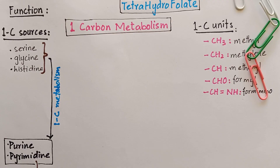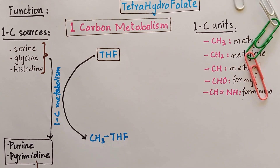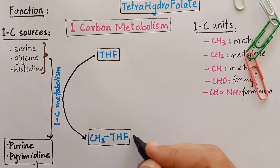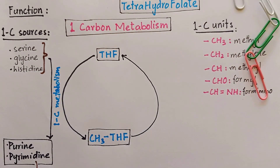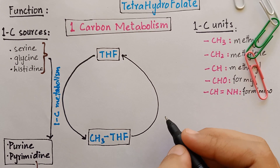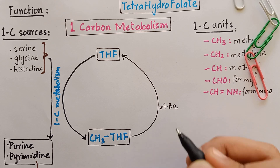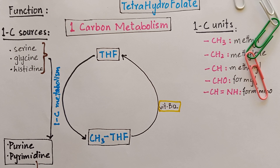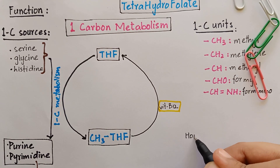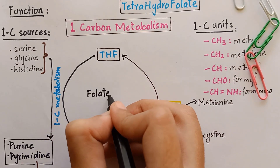As a result of one carbon metabolism, tetrahydrofolate becomes methylated when the one carbon fragment is a methyl group. This methyl-tetrahydrofolate has to be converted back to the tetrahydrofolate form to be reused in one carbon metabolism again. Vitamin B12 is needed for its conversion back to tetrahydrofolate in a reaction where homocysteine is converted to methionine. This is the folate cycle.